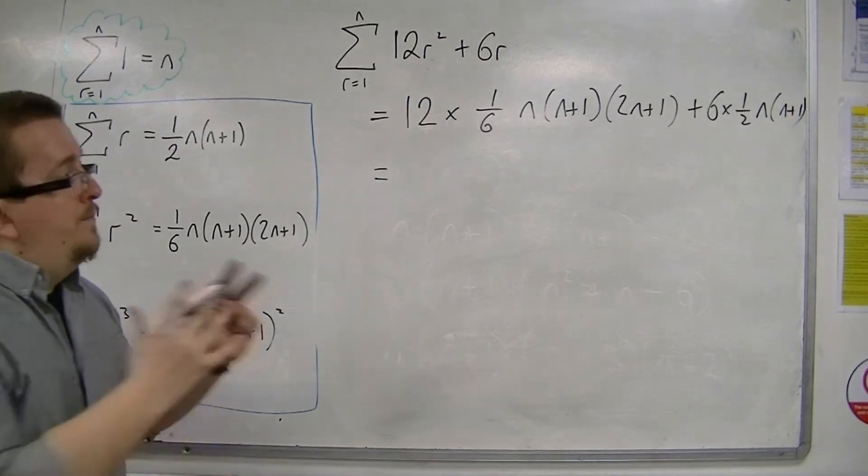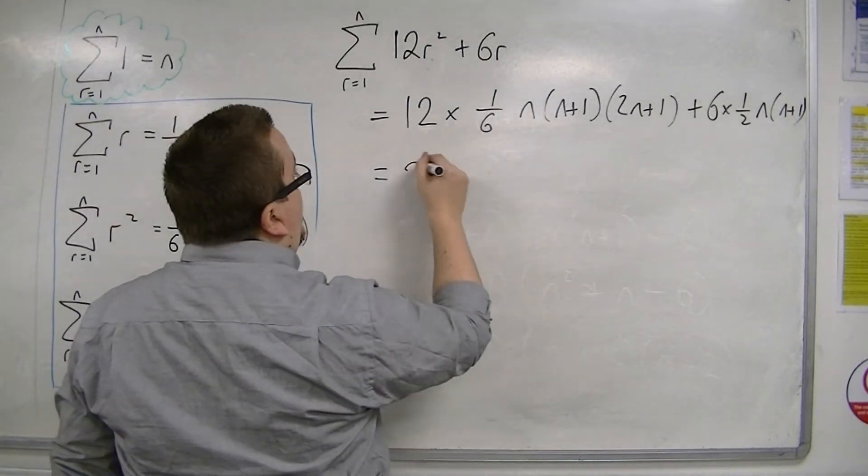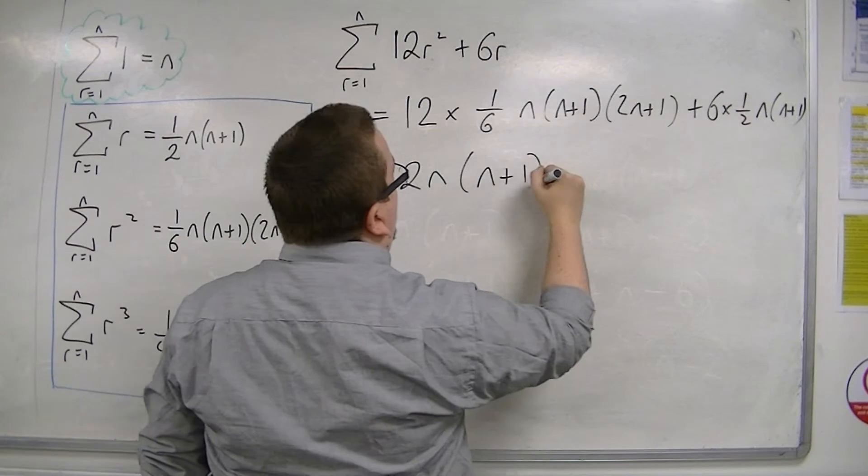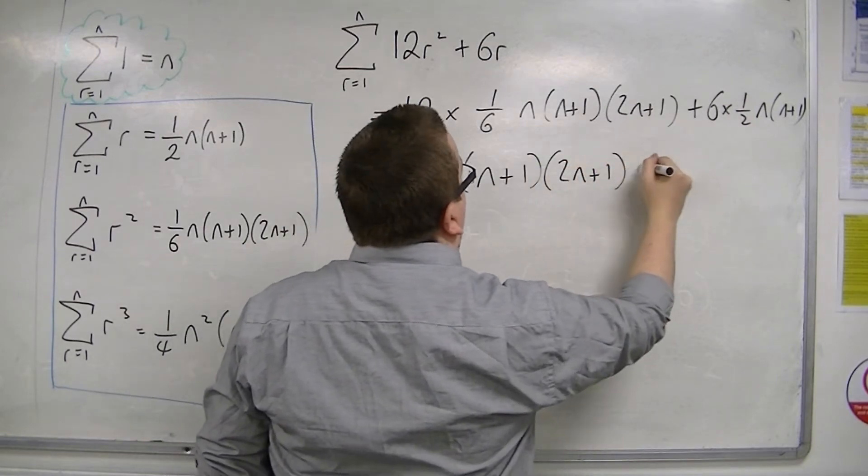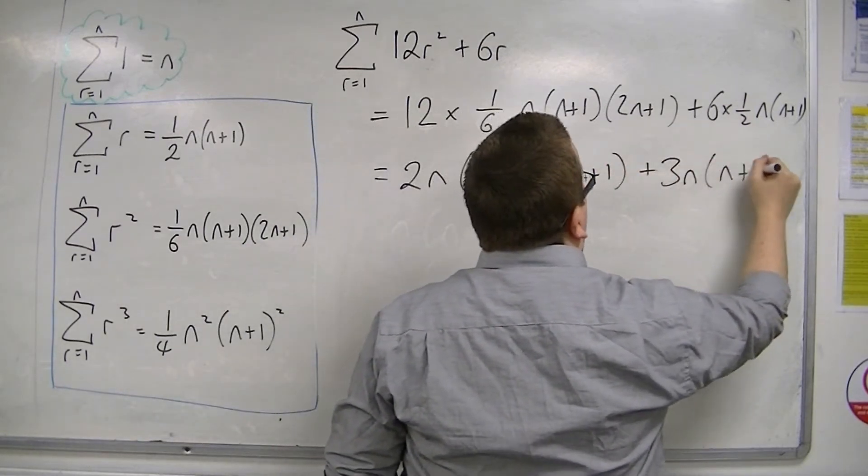Let's simplify this. We've got 12 lots of 1 sixth is 2, so 2n, n plus 1, 2n plus 1. And then we've got 6 halves, so that's 3n, n plus 1.